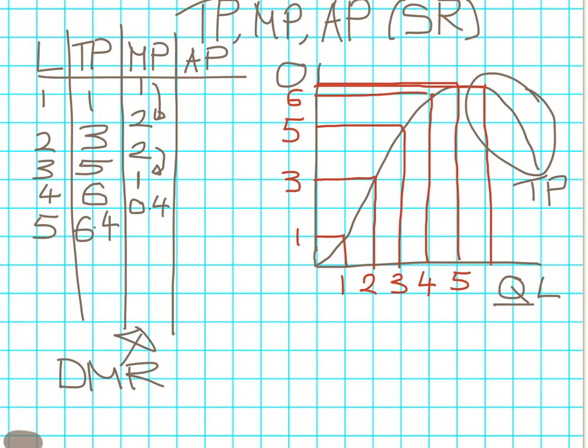The final part is to find out the average product. All we're doing is dividing total product by your number of workers. One divided by one is one. Three divided by two is 1.5. Five divided by three is 1.7. Six divided by four is back down to 1.5. And 6.4 divided by five is 1.28, but I'll round it to 1.3.